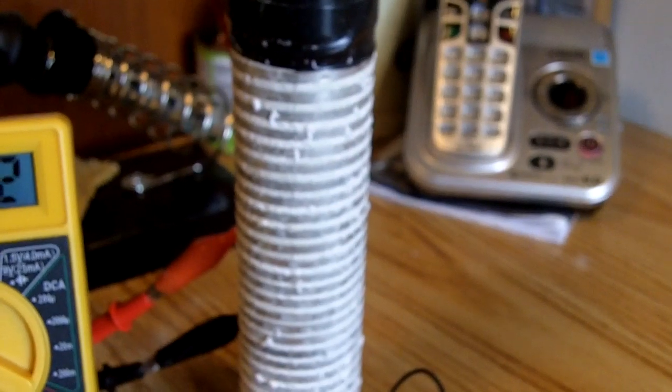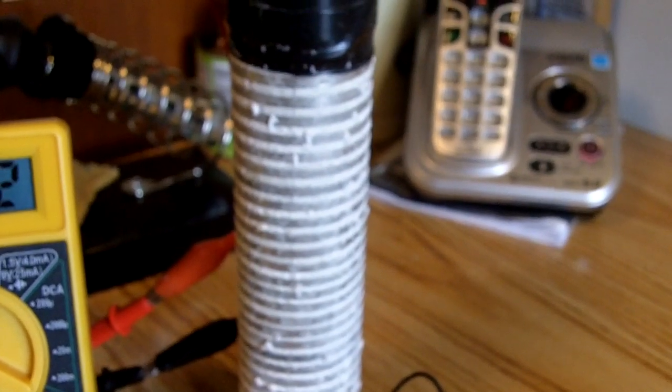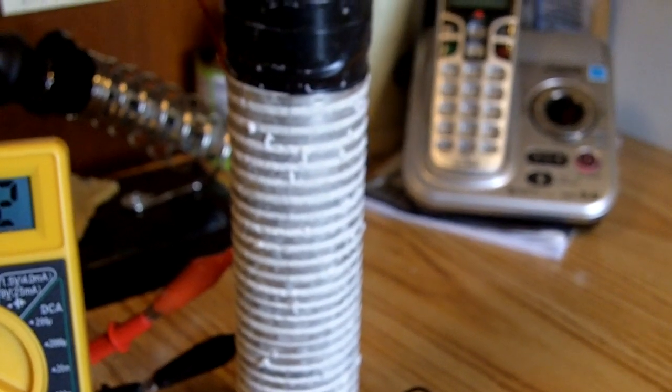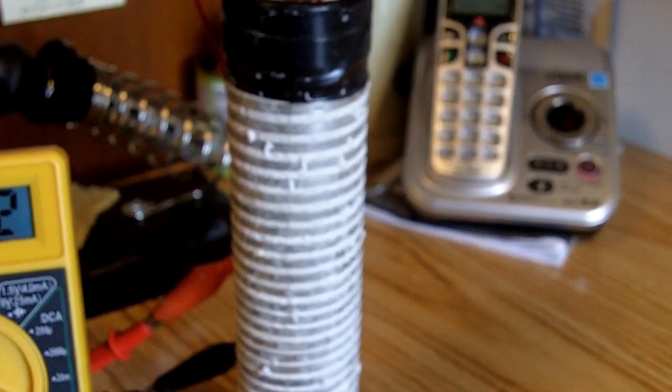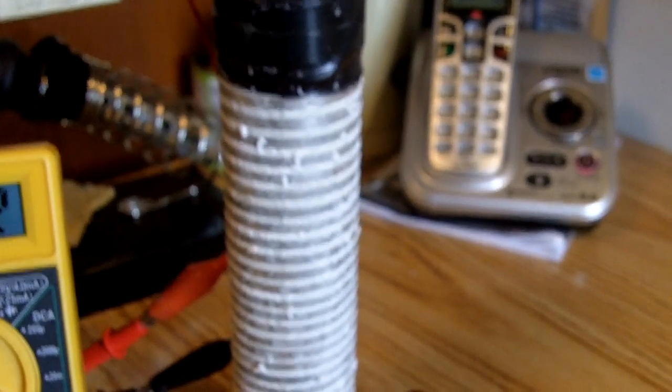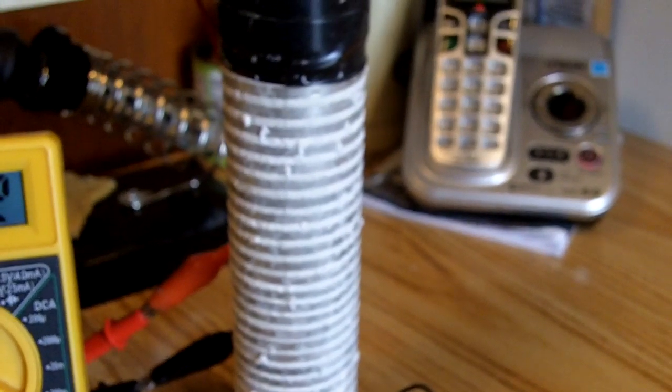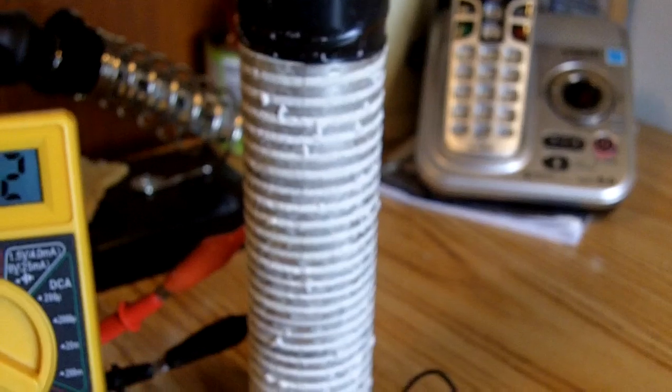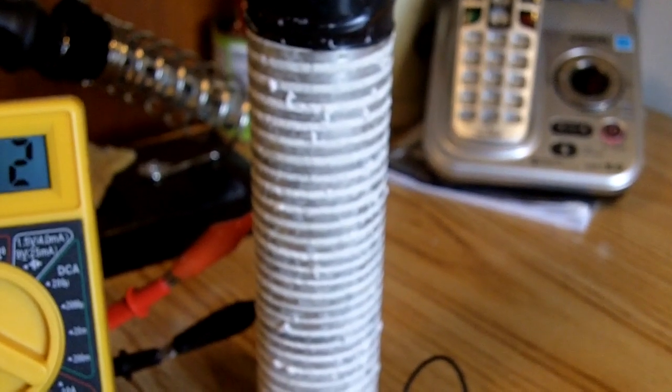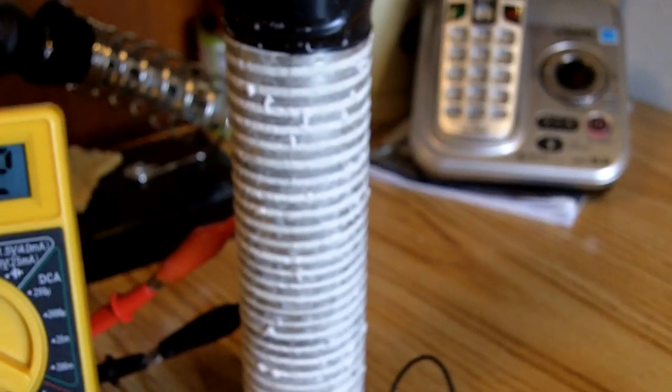So I treated it again. I wet it down again and sprinkled Epsom salt on it, rubbed it in by hand. I sprinkled a little more substitute salt on it, rubbed it in by hand. Then I just let it dry. I thought, I'm not going to tape it up. I'm going to let it dry and just let it keep right on drying.